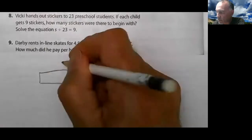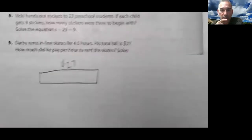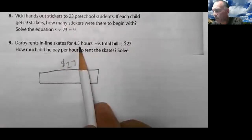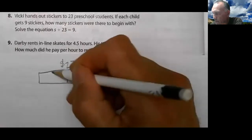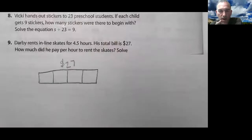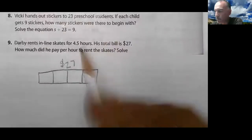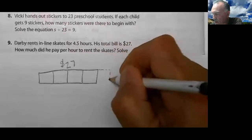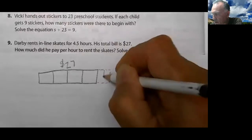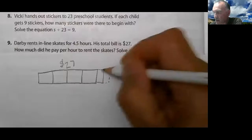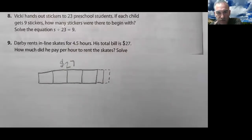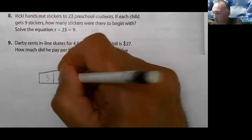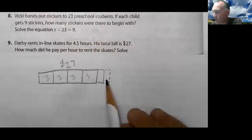Look at this. They're giving me the total right there. The total is $27. How much did he rent per hour? Well, I know it's four and a half hours. There's four hours, but it says four and a half. Am I going to get four and a half? How about like this? There is four and a half. Okay. So now I have $27 total. How much did he pay per hour? I don't know. I have four and a half of them.